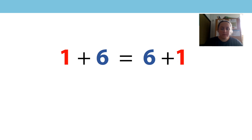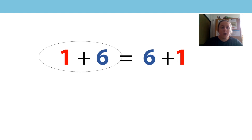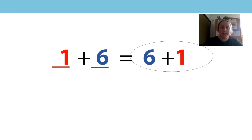Here is an equation: one add six is equal to six add one. What do you notice about this equation? Pause the video to have some thinking time or to discuss with an adult nearby. I've noticed that one and six are on both sides of the equal sign. On the first side, the one comes first and the six comes second, whereas on the second side, the six comes first and the one comes second.